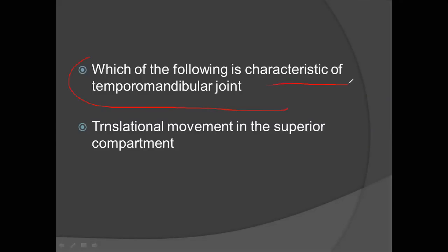Which of the following is the characteristic of the temporomandibular joint? The answer was that translatory movement occurs in the superior compartment. I don't remember the rest of the statement, but this is from this year's paper — it will most probably be copy-pasted in the spring exam as well.